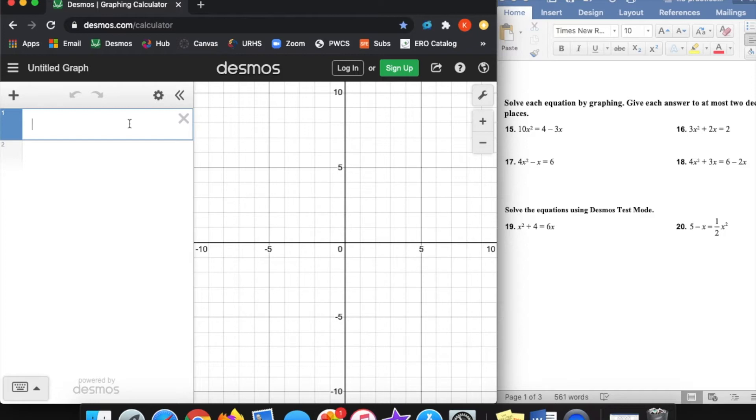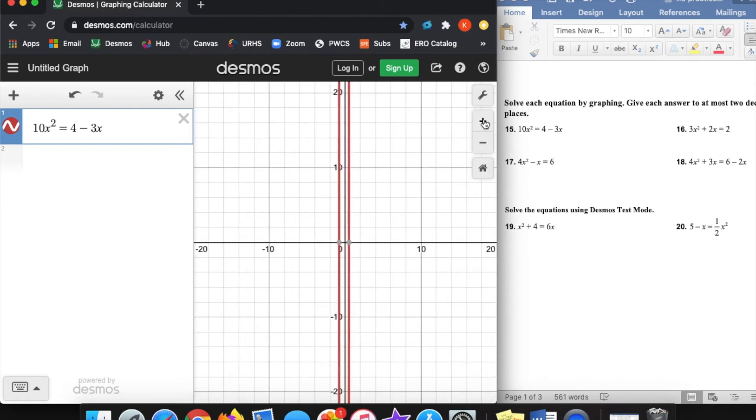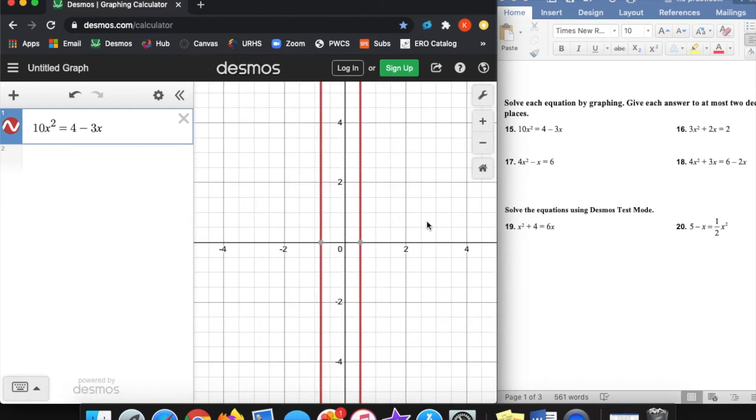If we just type in exactly what it says, 10x squared equals 4 minus 3x. Let's see what shows up. We look and we see these two vertical red lines. If you zoom out a little bit, you see that it's not like a quadratic curve that's just not zoomed out enough. It's actually two vertical lines.